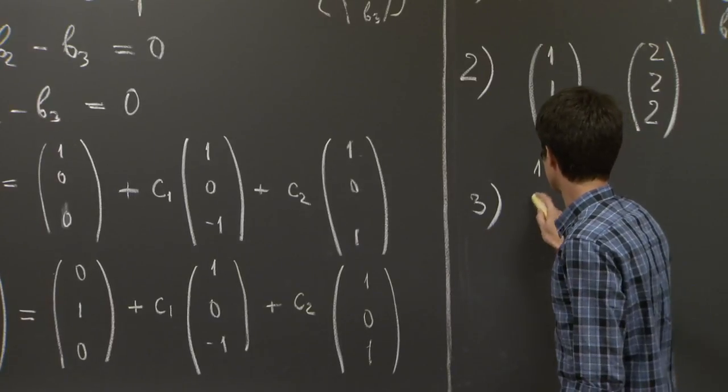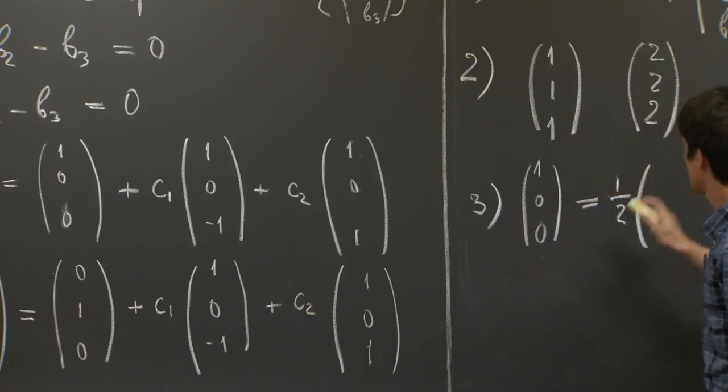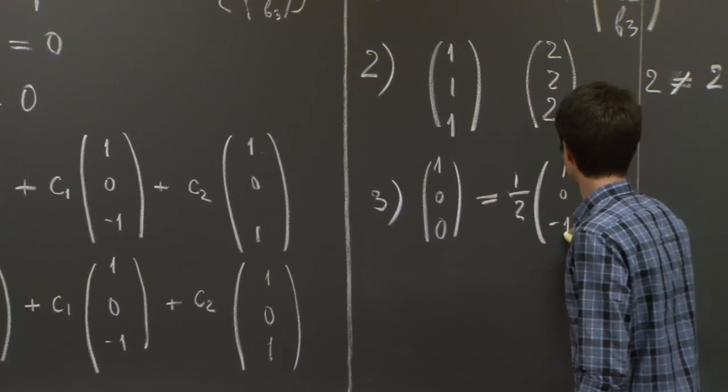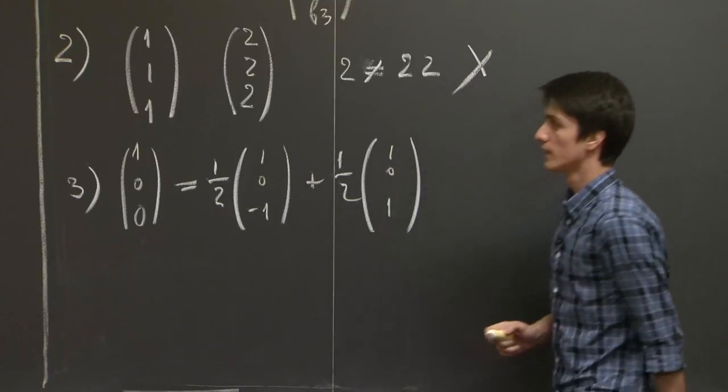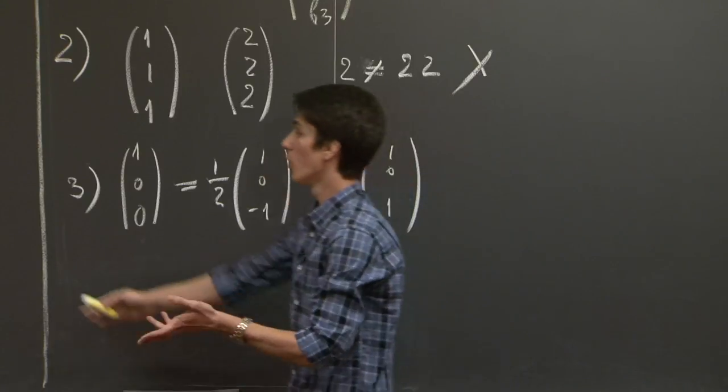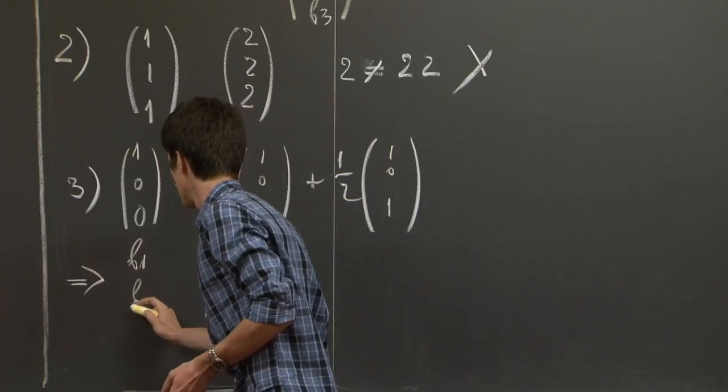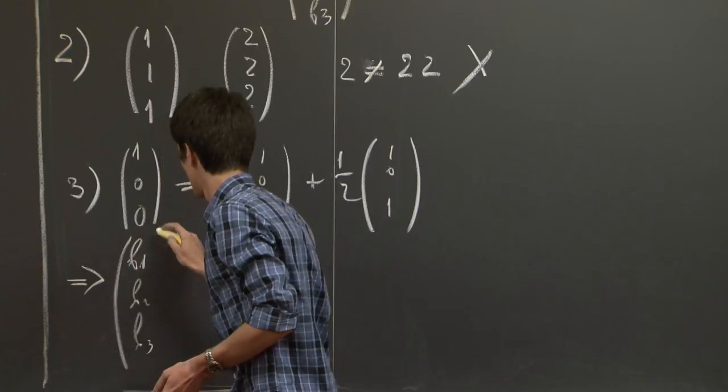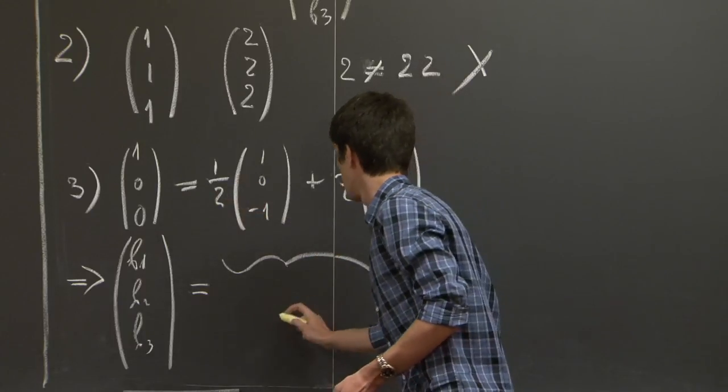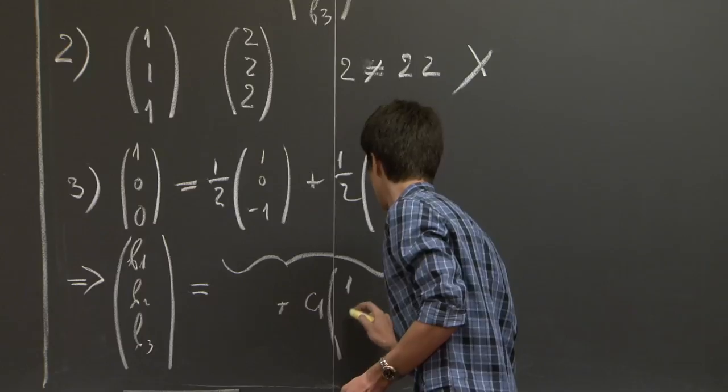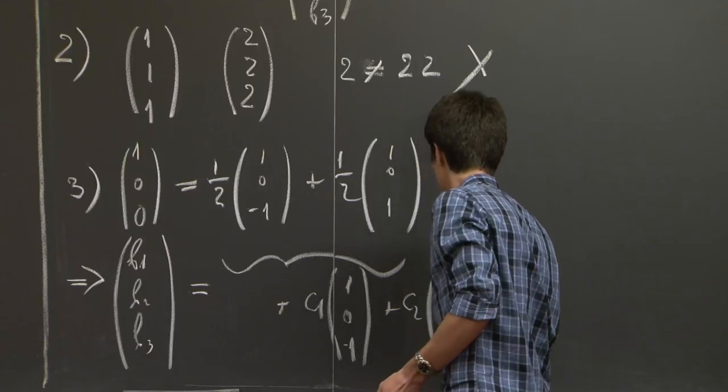And it's fairly obvious to see which linear combination of these two vectors it is. It's ½(1, 0, -1) plus ½(1, 0, 1). So we can write the whole relation in the following way: (b₁, b₂, b₃) is (1, 0, 0), which we can write as this, plus c₁(1, 0, -1) and c₂(1, 0, 1).